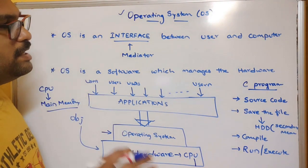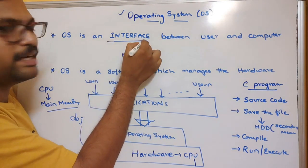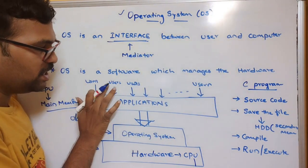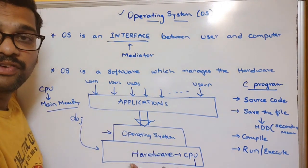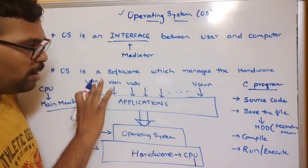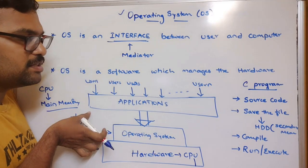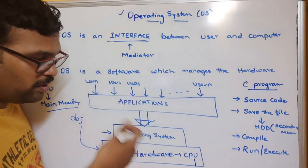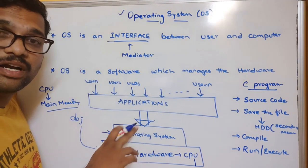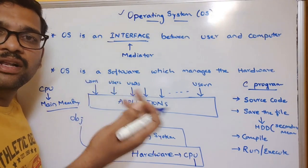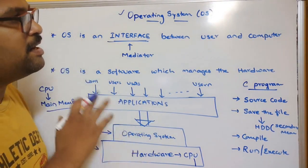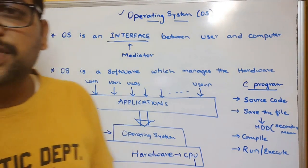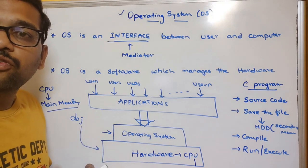So the point is clear: the interface, also called a mediator, sits between the user and the computer — meaning the CPU, hardware, input devices, output devices, and everything else. To communicate between the user and the hardware, we need the system software called the operating system. In further sessions we will go deeper into the functions and services provided by operating systems. Hope you understood this basic introduction — the definition and importance of the operating system. If you enjoyed this session, please like, share, and subscribe to our channel.